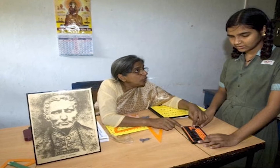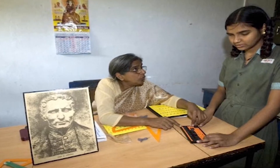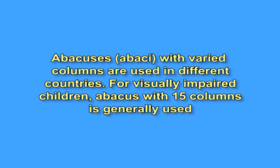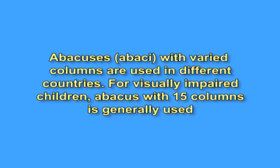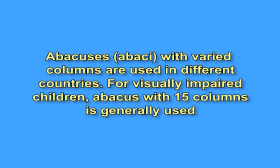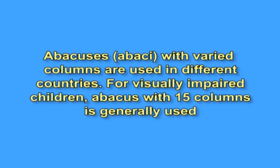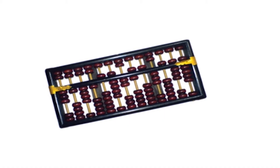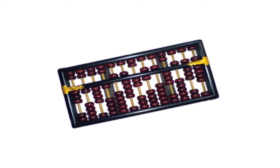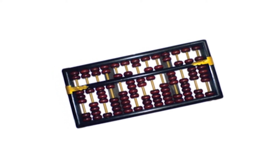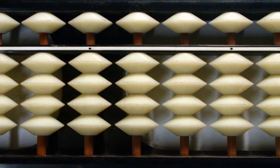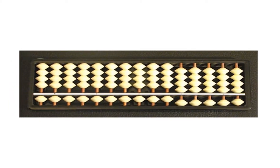Abacus is a device used by visually impaired children for doing basic mathematical calculations. Abacus is rectangular in shape. Abacuses with varied columns are used in different countries. For visually impaired children, an Abacus with 15 columns is generally used. A bar separates the Abacus horizontally, cutting across all 15 columns, leaving 2/3 of the area below and 1/3 of the area above. The lower portion is known as the lower Abacus and the upper portion as the upper Abacus.